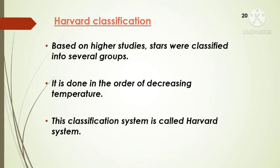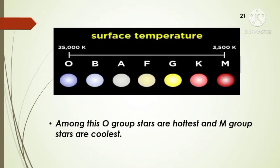This classification system was called the Harvard system, which was developed by early astronomer Annie Jump Cannon. This classification was based on temperature.